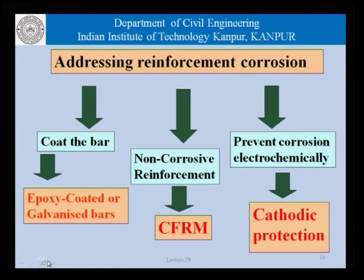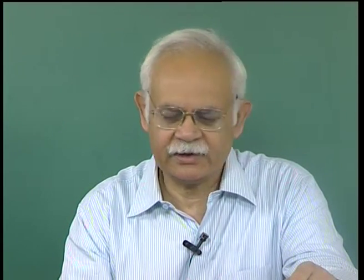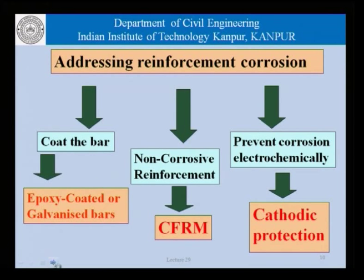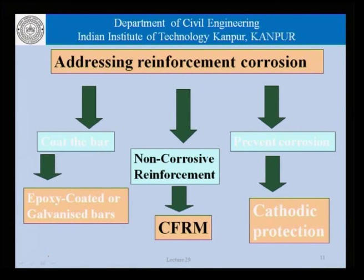Sometimes it is also called FRPs, or fiber reinforced plastics. Then we also have the possibility of preventing corrosion electrochemically, as happens in pipelines and other structures, where one of the strategies that can be adopted is cathodic protection. As far as our discussion today is concerned, it largely focuses on non-corrosive reinforcement, that is the use of CFRM — continuous fiber reinforced materials.